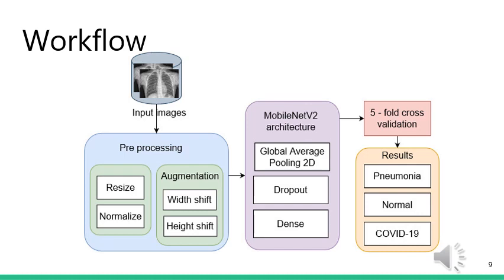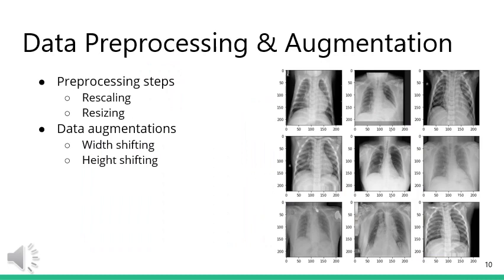In our workflow, the first step is pre-processing using resizing and normalization. Augmentation is then applied as a regularization technique on the training data using width shift and height shift. Next, the images are trained using a MobileNetV2 architecture-based model with additional layers. Finally, the classification results are produced as either pneumonia, normal, or COVID-19. All images are resized to the same size and normalized. Augmentation is used on the training set to generalize the images using width shift and height shift with a range of 0.1.